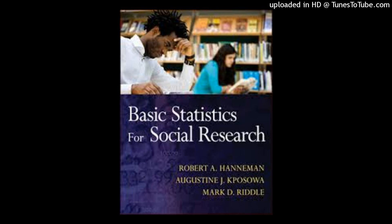Variance (σ²) is a measurement of the spread between numbers in a data set. It measures how far each number in the set is from the mean, calculated by taking the differences between each number in the set and the mean, squaring the differences to make them positive, and dividing the sum of the squares by the number of values in the set.